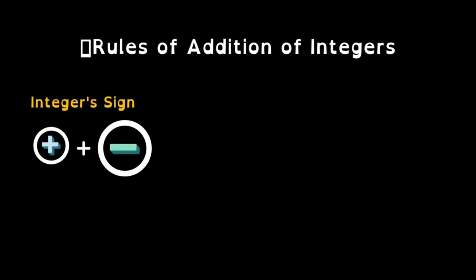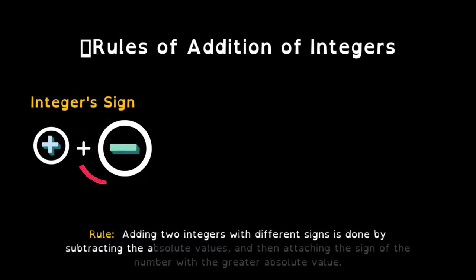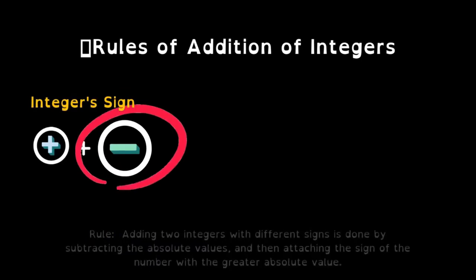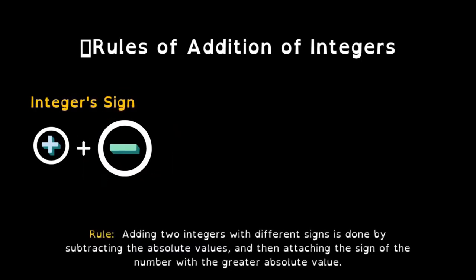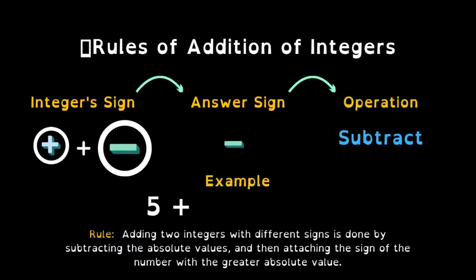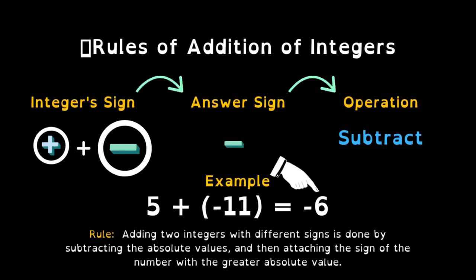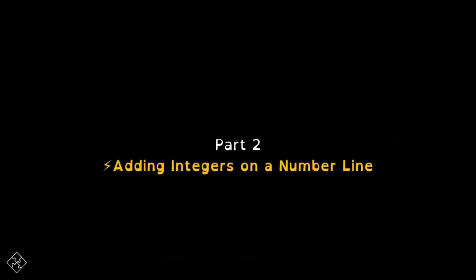For the last case, ang integer sign naman natin ay magkaiba rin, pero this time ang mas malaki ay negative integer. Adding two integers with different signs is done by subtracting the absolute values and then attaching the sign of the number with a greater absolute value. Here, the greater absolute value is negative. For example, 5 plus negative 11: negative 11 is the greater number, so the answer sign is negative. We take the absolute value of negative 11, which is 11, then subtract: 11 minus 5 equals 6, and the answer is negative 6. That is the 4 cases or 4 rules.